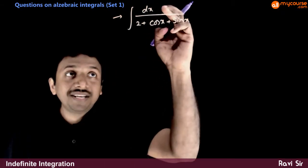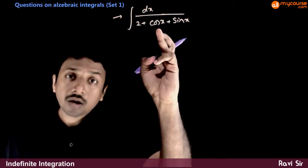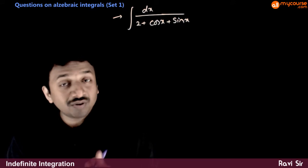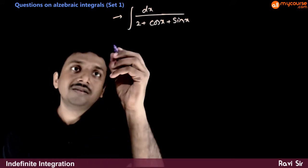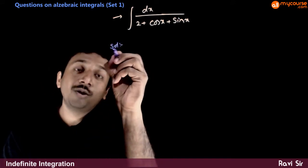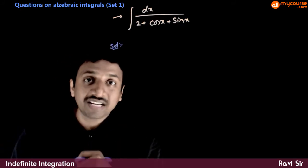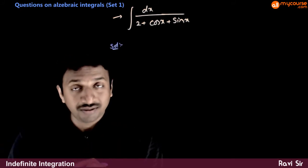In this question, you are asked to integrate dx by (2 + cos x + sin x). In this question there are no squares. So, here if there are no squares, what is the technique that we use to solve this?